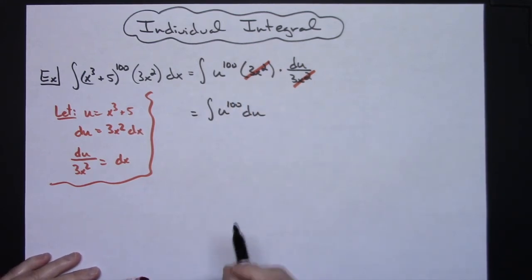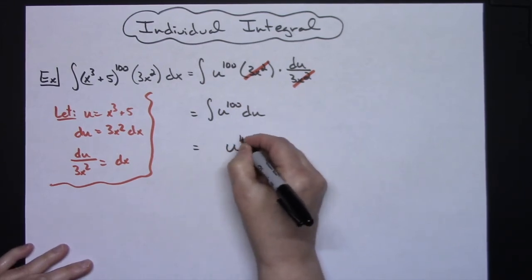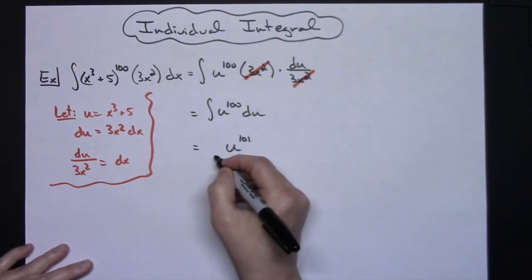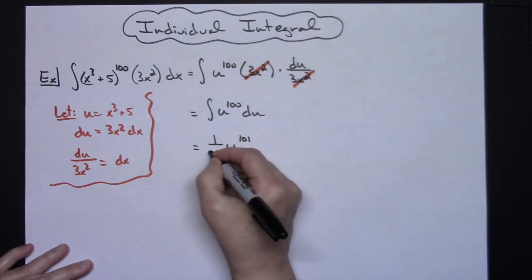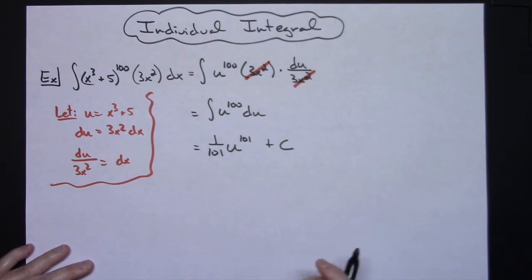Alright we can integrate this very easily. Add 1 to that exponent we'll have u raised to the 101 and then putting in front we'll have the 1 over 101. We can add the plus C because we have integrated.